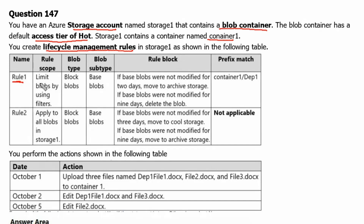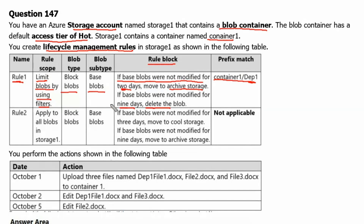Rule 1. The scope of rule 1 is to limit blobs by using a filter. The filter is the prefix match of container1 and the blob name starting with dep1. Blob type is block blobs and blob subtype is base blobs. The conditions are: first, if base blobs were not modified for 2 days, move to archive storage; second, if base blobs were not modified for 9 days, delete the blob. Rule 1 is applicable only on blobs whose name starts with dep1.